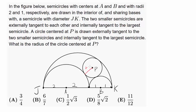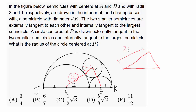We want to find the radius R of the circle centered at P. One thing that may jump out is that we can connect the centers and form a triangle. This length is going to be 2 plus R, this length is R plus 1, and this length is going to be 2 plus 1, or 3.